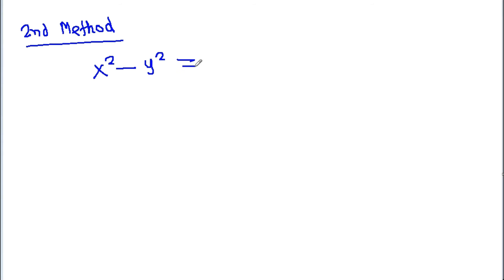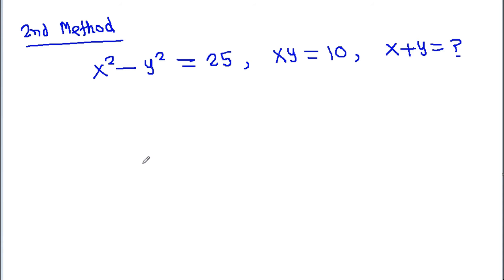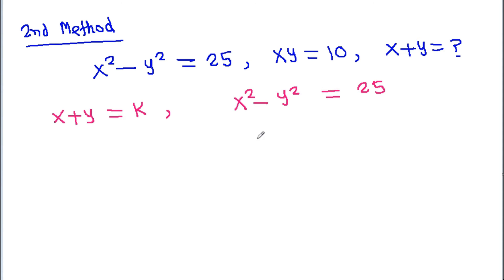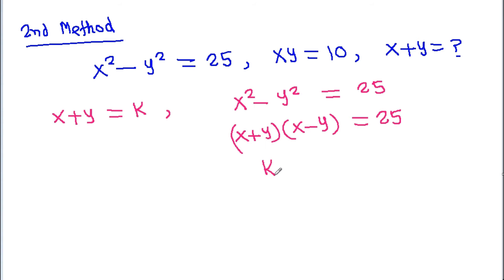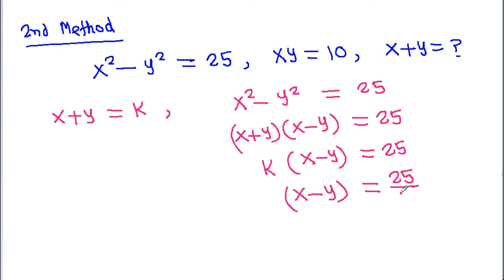We have x squared minus y squared is 25 and xy is 10. Suppose x plus y is equal to k. Then (x plus y)(x minus y) equals 25, so k times (x minus y) equals 25, and therefore x minus y equals 25 by k.